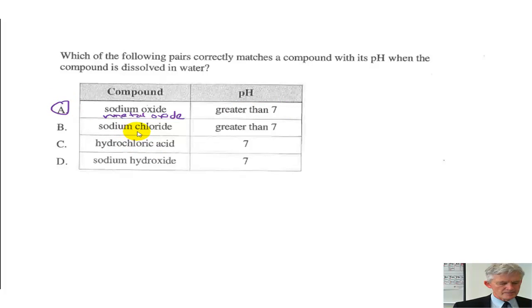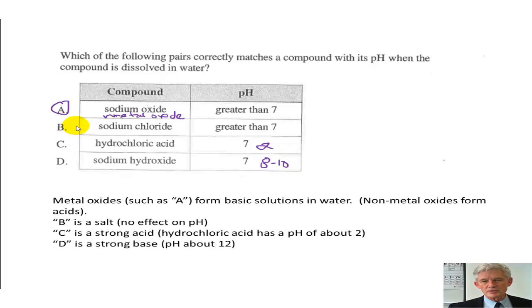Sodium chloride is a salt, has absolutely no effect on pH, so it's not going to be greater than 7. Hydrochloric acid is a very strong acid. You're going to have a pH of around 2. Sodium hydroxide is a strong base. You're going to have a pH up there around 8 to 10. So the only option that is correct is A. And of course, if you missed my little explanation there, there you go for that one.